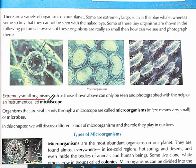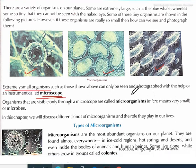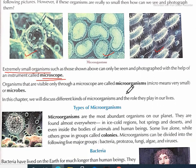Extremely small organisms, such as those shown above, can only be seen and photographed with the help of an instrument called a microscope. These are all micro-organisms. Organisms that are visible only through a microscope are called micro-organisms.